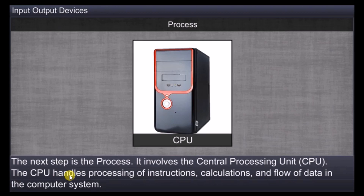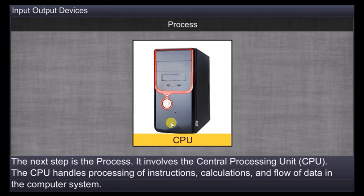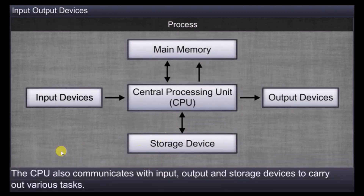The CPU, or processor, is commonly called the brain of the computer, where most calculations take place. The flow of data is controlled by the control unit inside the CPU. The CPU also communicates with the input device and the output device.